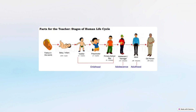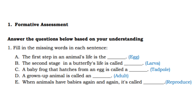After discussing the different life cycles of animals, we've covered the life cycle of a butterfly, a frog, a chicken, and birds in general — which have a similar cycle to chickens. We've also discussed the life cycle of humans, from being a fetus all the way to being an elderly person. Now let's have your formative assessment.